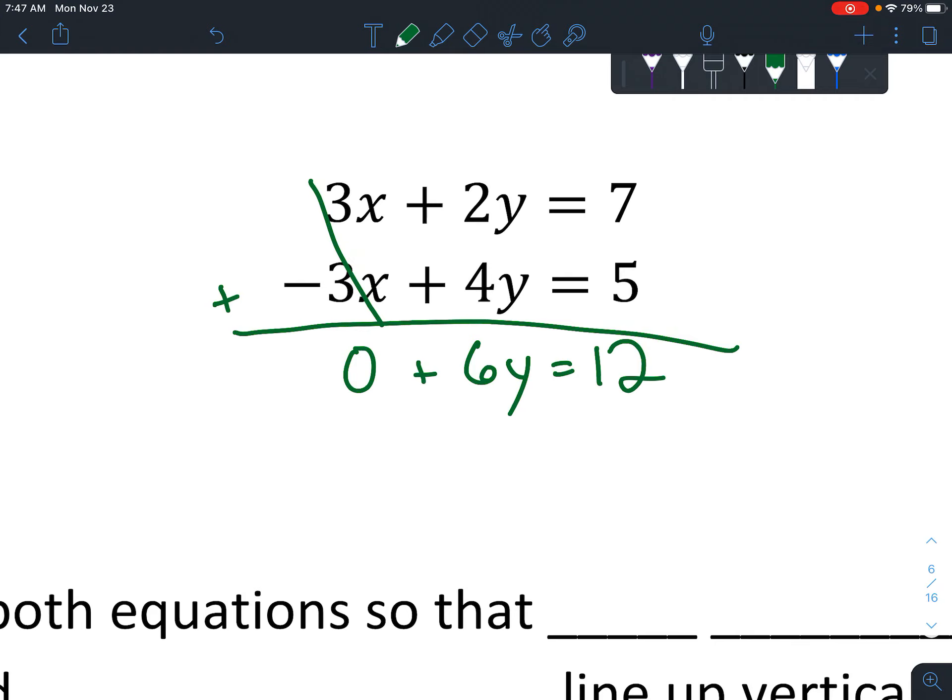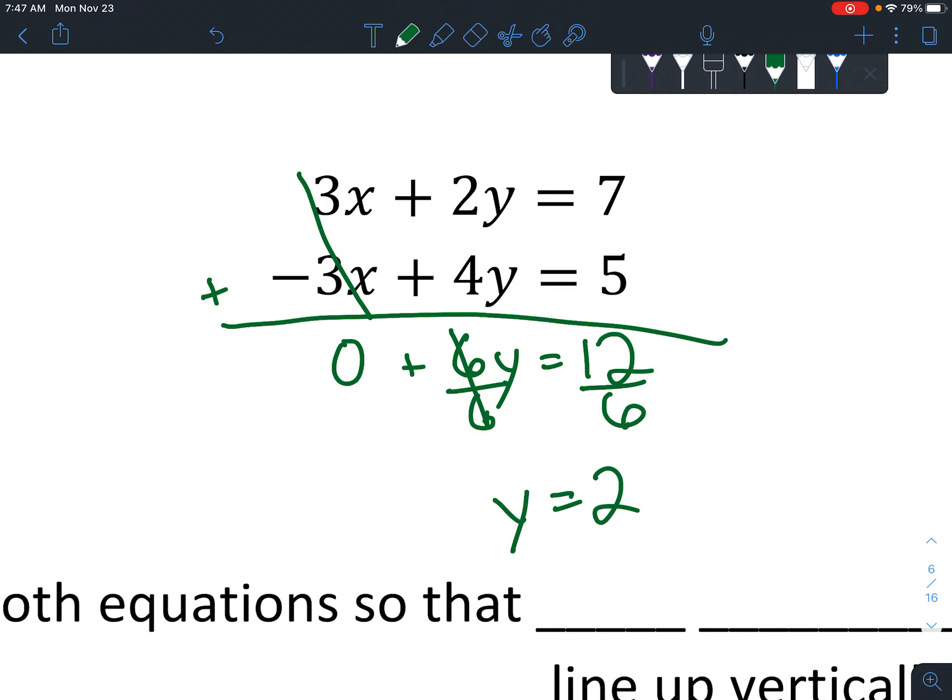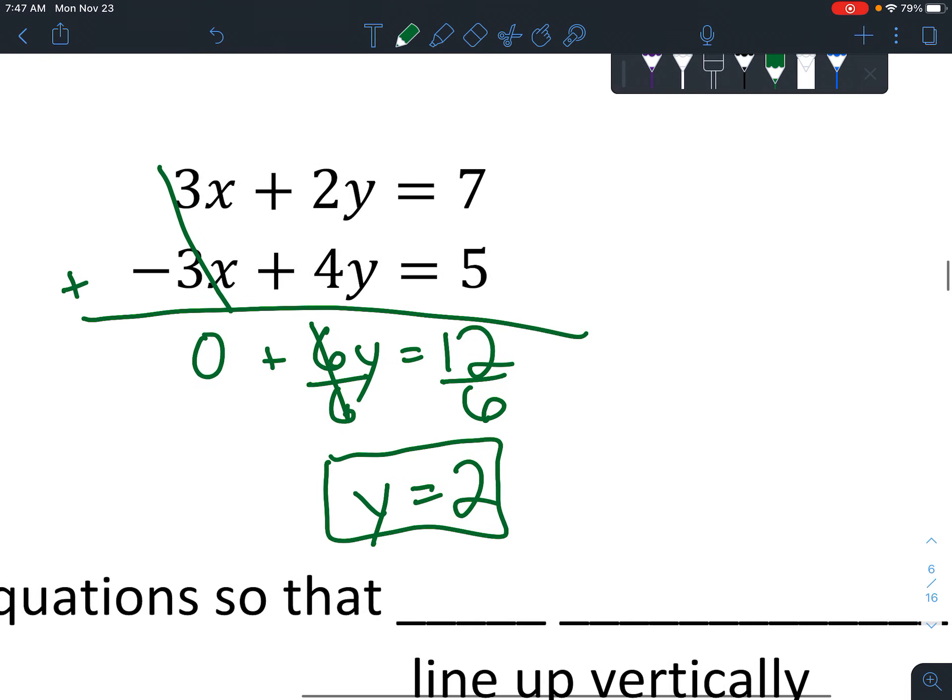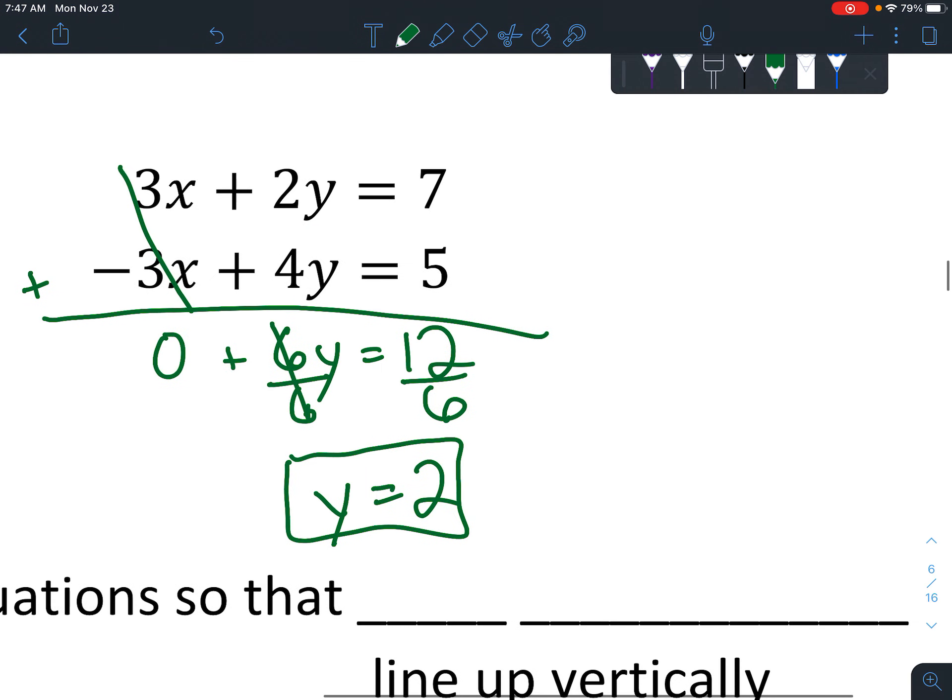Now at this stage, our x is gone, and now we have a much more simple equation to solve, because we could divide both sides by 6. Divide both sides by 6, and you end up with y equals 2. So you can see that you can figure that out fairly quickly, probably more quickly than by substitution, because it would be a little more complicated to solve for one of those variables.